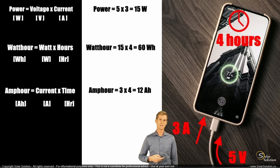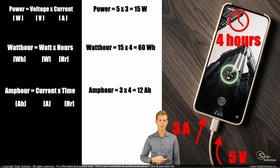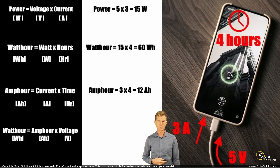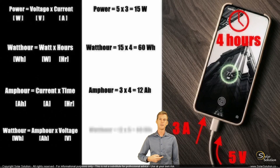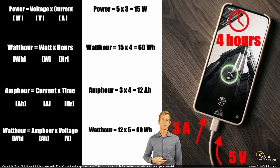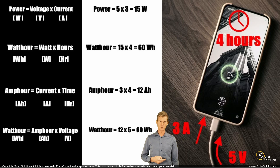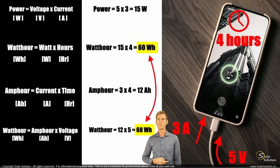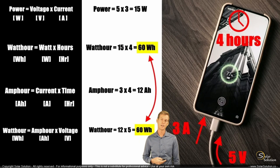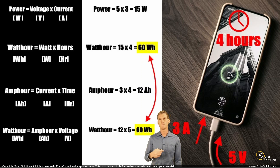Then in order to get the total amount of watt hours going into your phone, you take the amp hours — we just calculated 12 — and you multiply it by the electrical voltage, by the electrical pressure that you're charging your phone with, which is 5. So 12 times 5 equals 60, which is identical to what we just calculated before. Those are two different ways in which you can calculate the total amount of electrical energy that you're putting into the battery of your phone during a typical charge cycle.